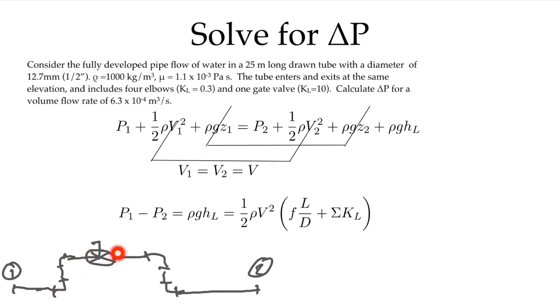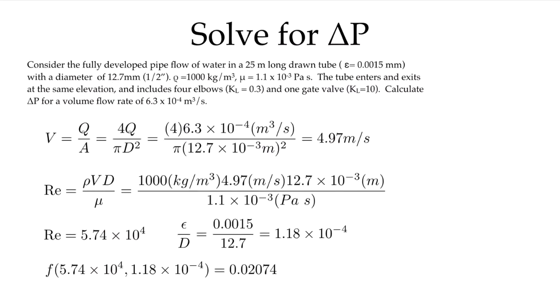So let's begin to solve the problem. The first step, exactly as in the previous example without the minor losses, we need to calculate the velocity from our volume flow rate. We see that as before nothing has changed—that's 4.97 meters per second. We can then calculate the Reynolds number; again, exactly as before, it gives us 5.74×10⁴.